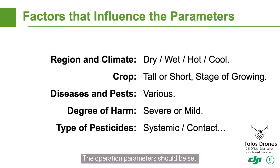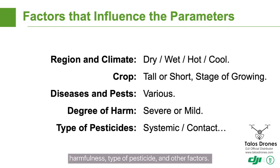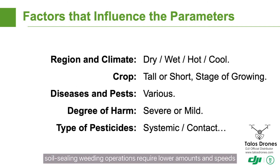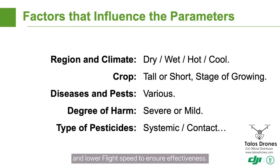The operation parameters should be set after considering the region, crop, type of disease or pest, harmfulness, type of pesticide, and other factors. No one set of parameters is suitable for all operations. Taking a rice field as an example, soil sealing weeding operations require lower amounts and speeds, while stem and leaf application weeding requires higher spraying amount and lower flight speed to ensure effectiveness.